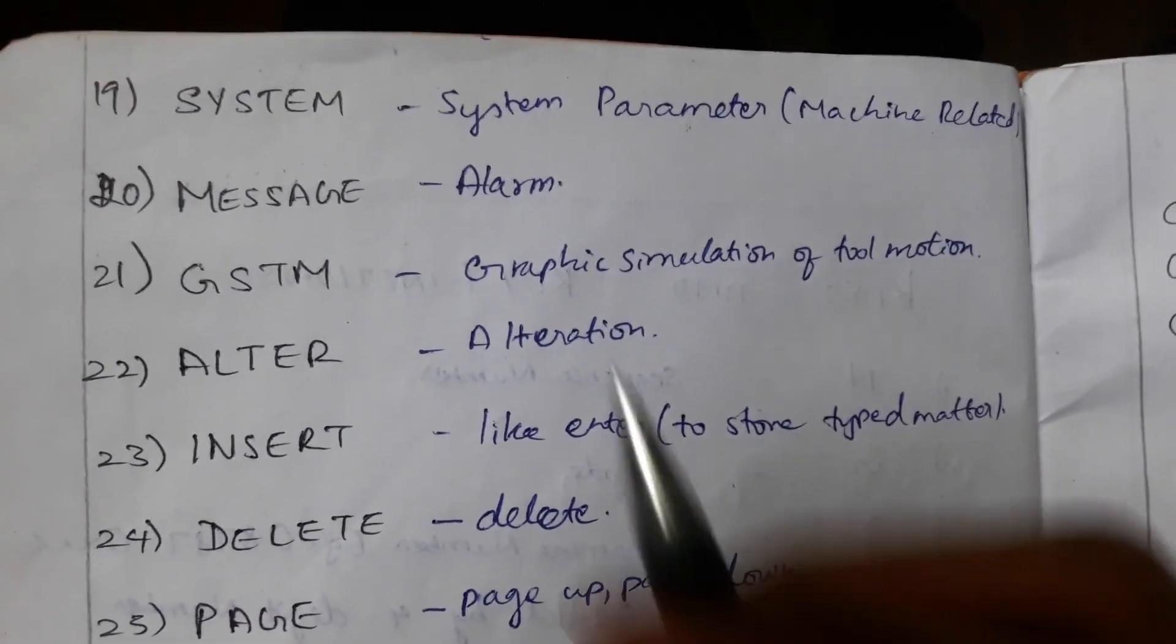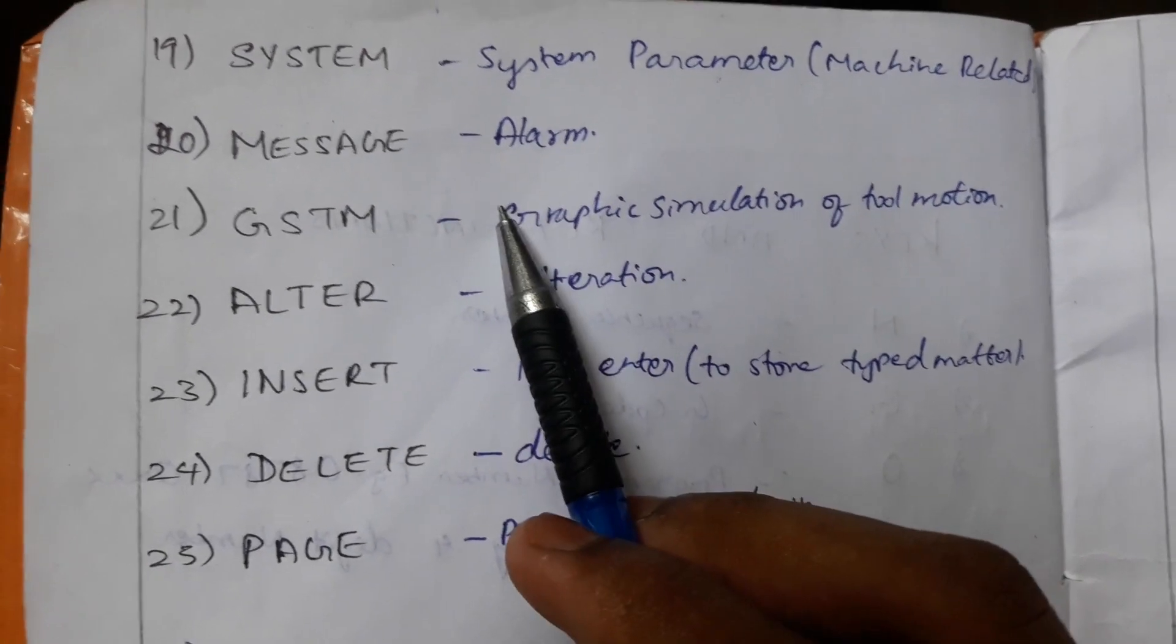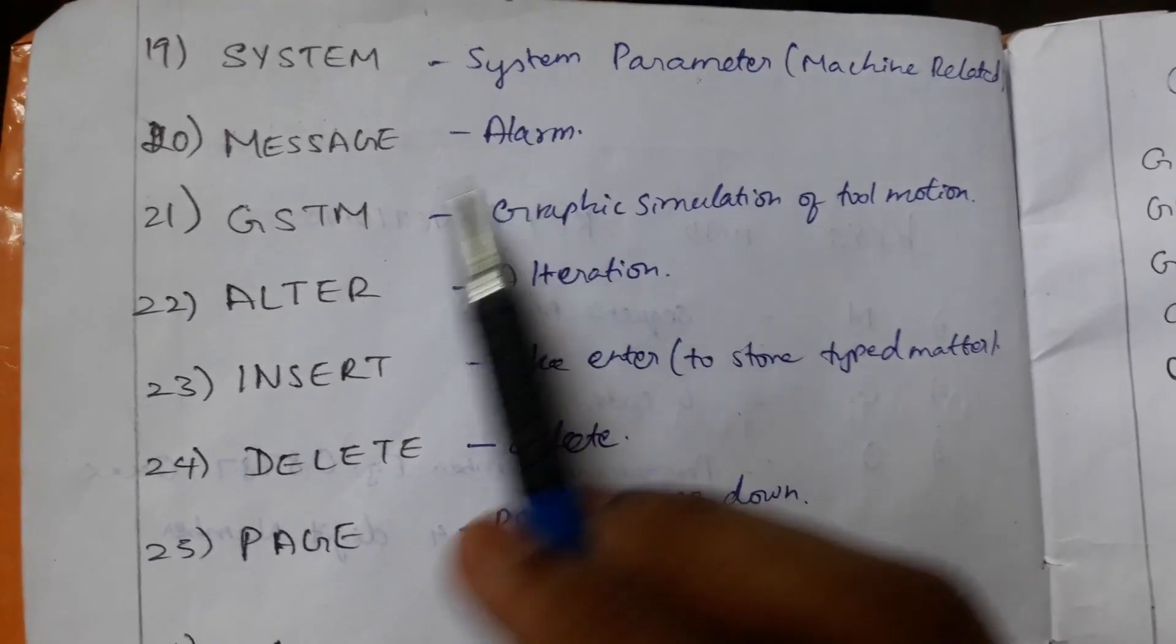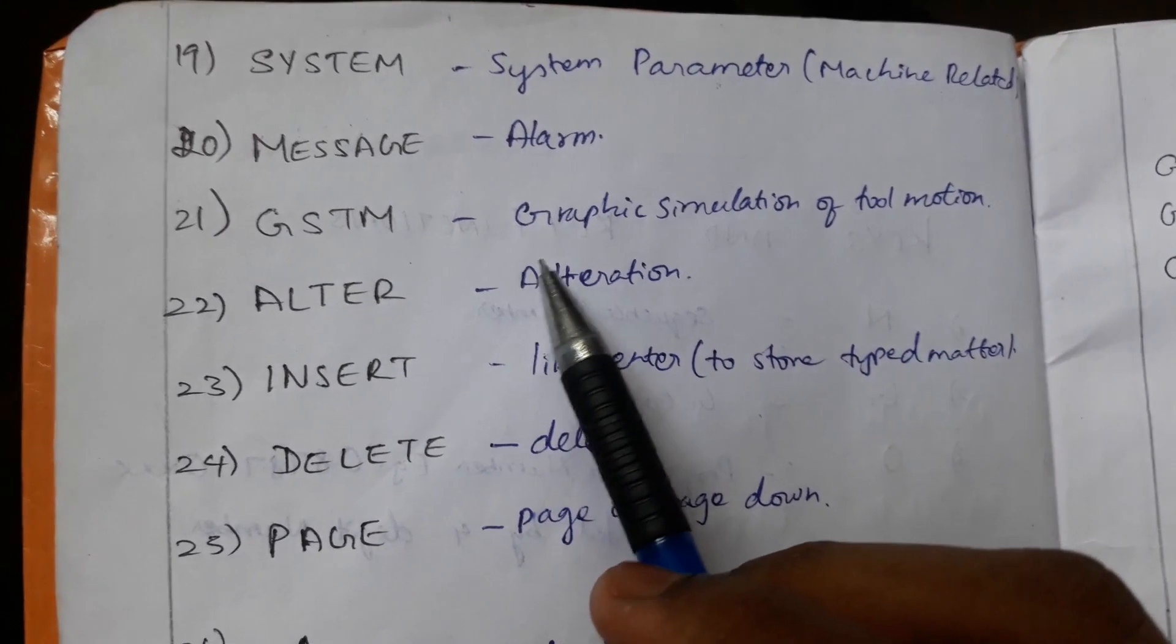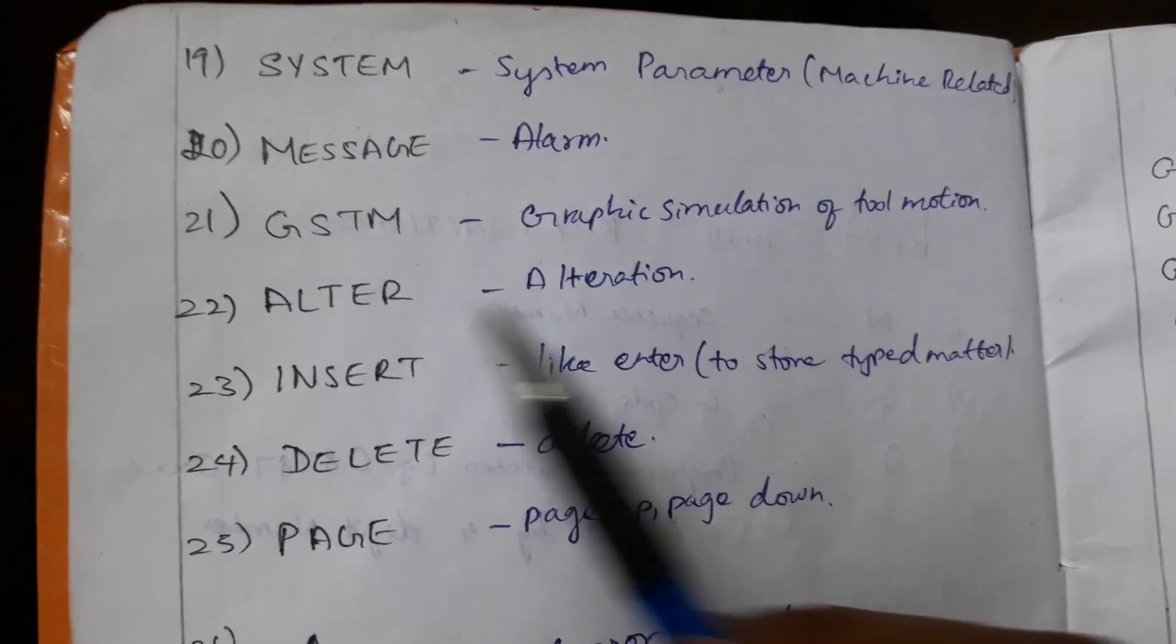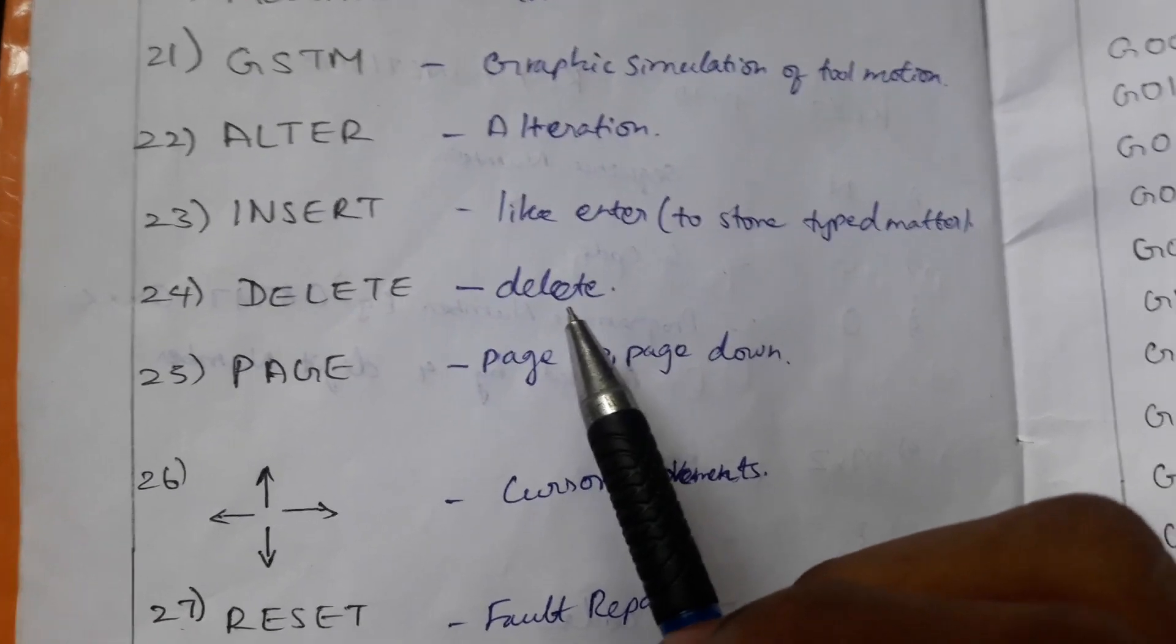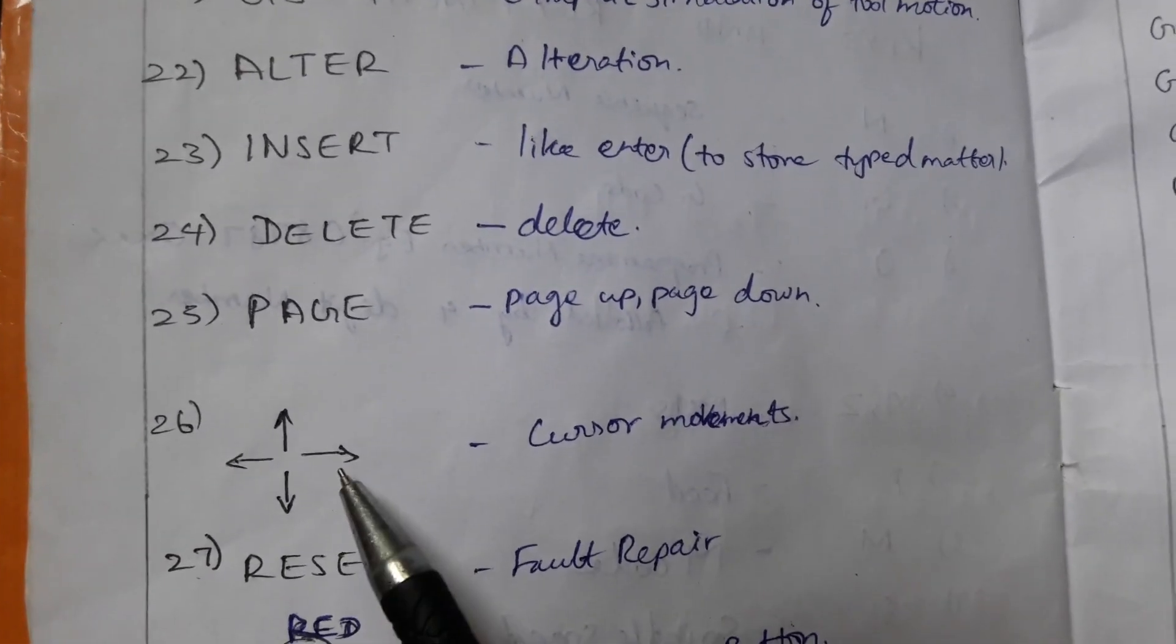Then SYSTEM parameter, machine related message. It is a message when there is an error that occurs in the CNC machine and an alarm sounds. GSTM, this is the graphic simulation of tool motion. ALTER for alteration, INSERT to store the type of matter, DELETE to delete the type of matter.